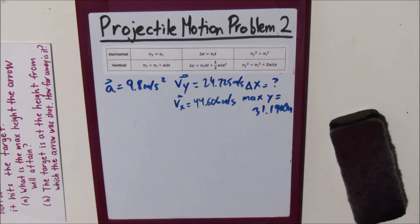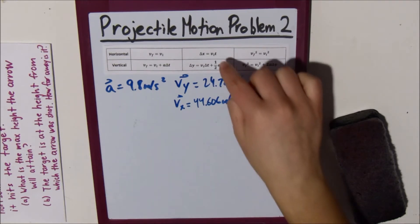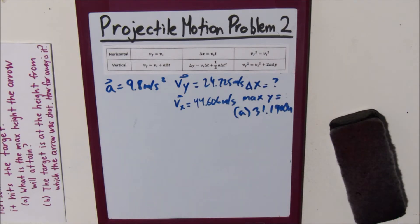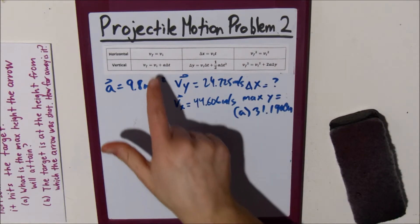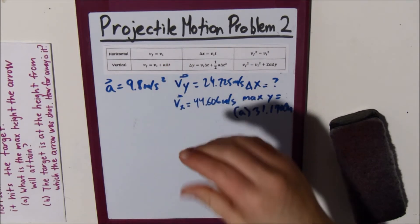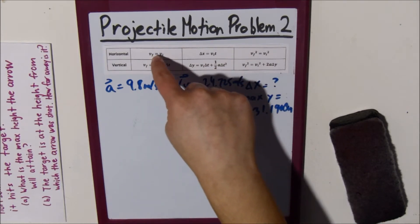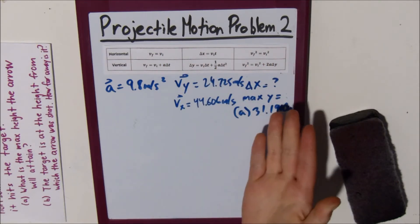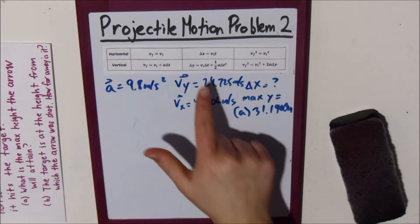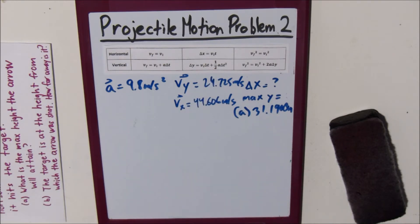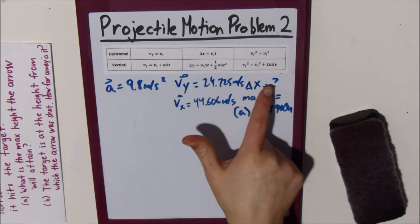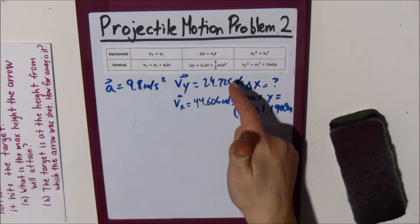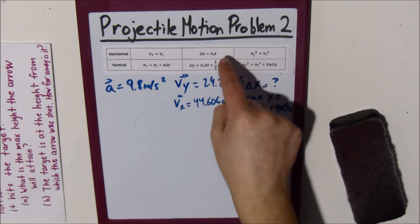Now for the second part of the problem, we need to figure out our change in time. The reason is that the horizontal motion equations only give us vf = vi or vf² = vi², which aren't helpful for finding delta x. So we'll use the vertical motion equations to solve for time, and then plug it into the horizontal equation for delta x.